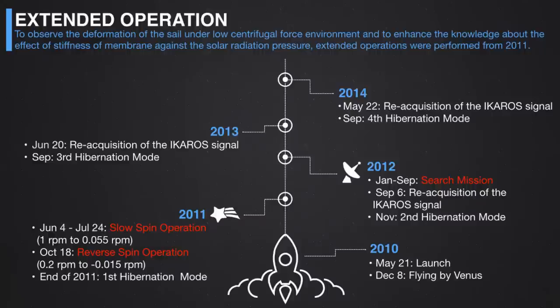In the half-year after launch, we succeeded in completing both the minimum success and full success criteria. We then went to extended operations, the purpose of which was to observe deformation of the sail in a low centrifugal force environment and to enhance knowledge about the effect of membrane stiffness. In the extended operation, we challenged the slow spin operation and also the reverse spin operation. Then Ikaros entered hibernation mode, so we conducted a search mission. I will now explain these three missions.